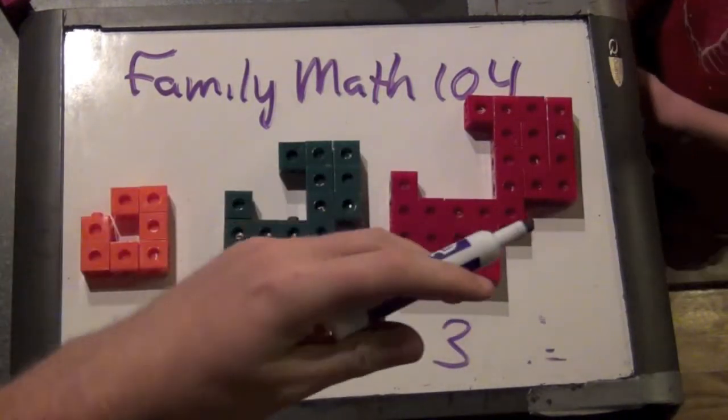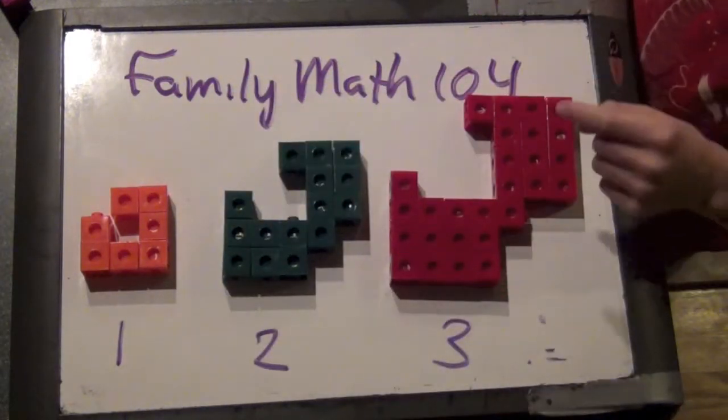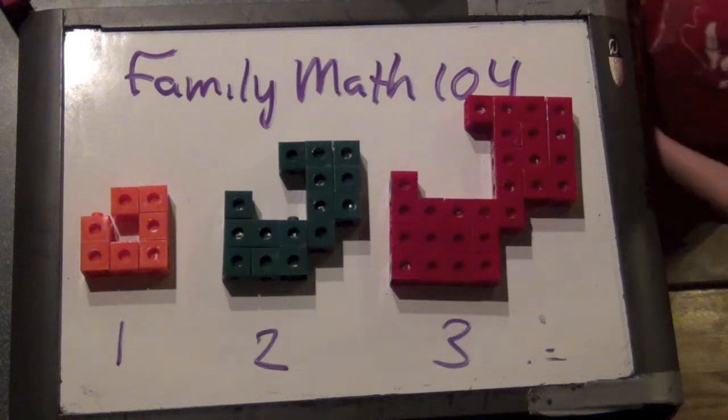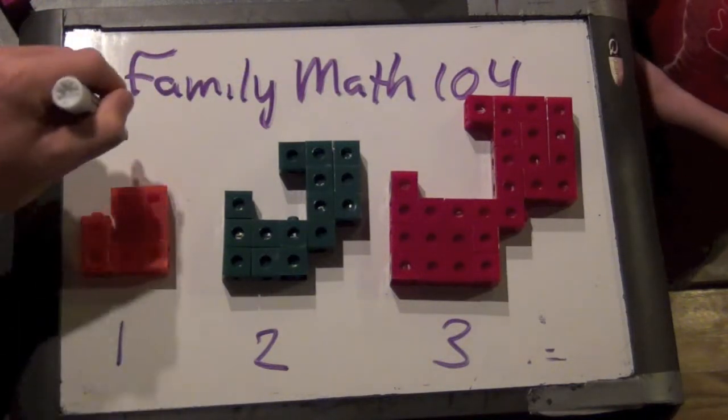Can you tell me, Eve, how many snap cubes are in that piece? One, two, three. Seven. Is that what you see? Let's see. Yeah, I do see seven. Great.